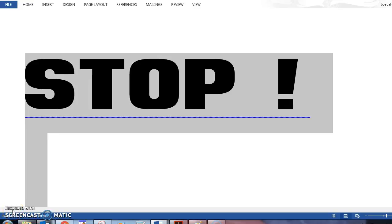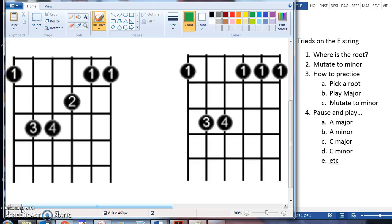If you haven't watched the video on how triads are formed, please stop and watch that video first. There should be a link below. This is about making major and minor triads on the E string.